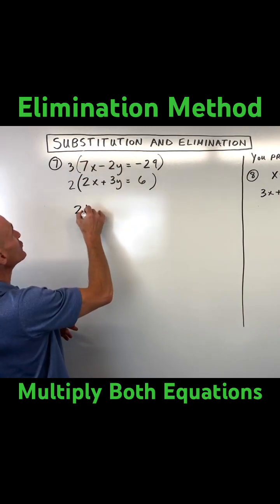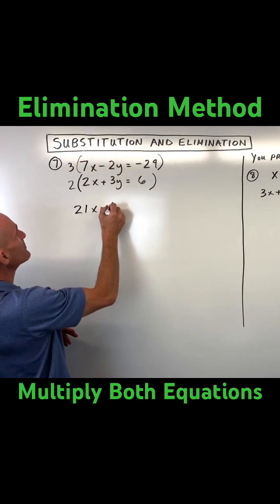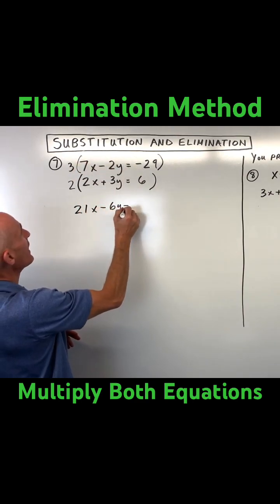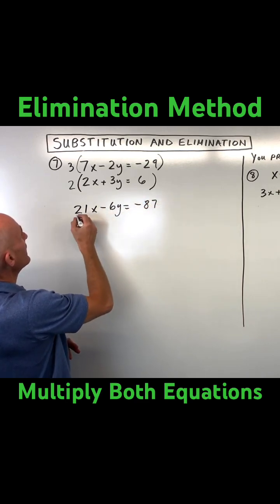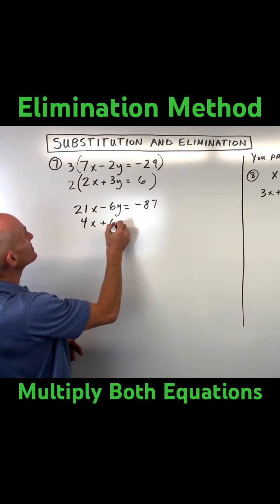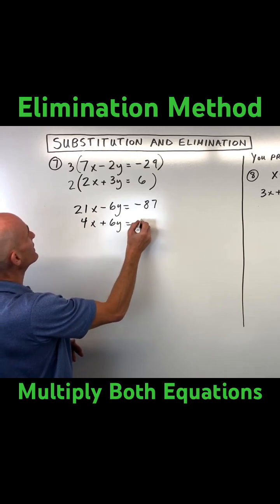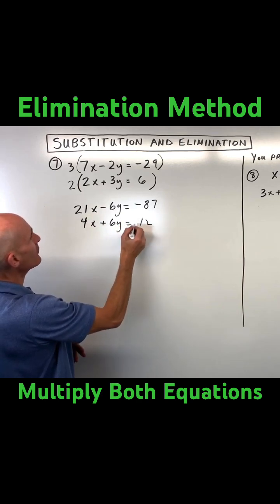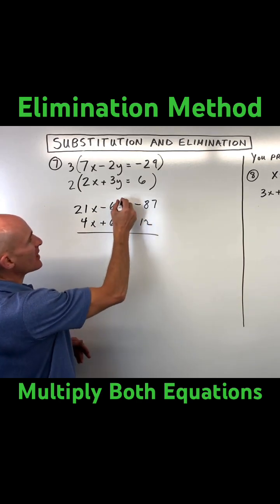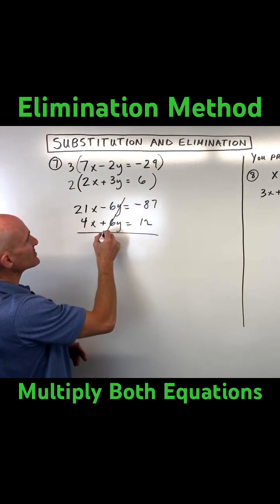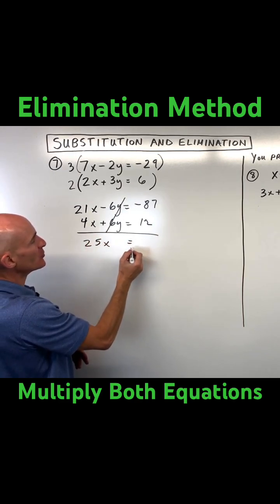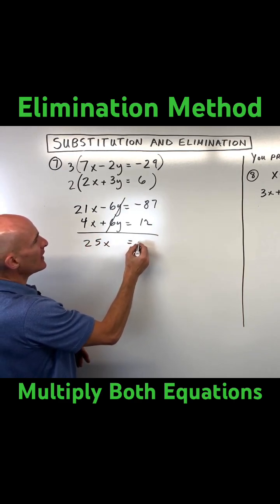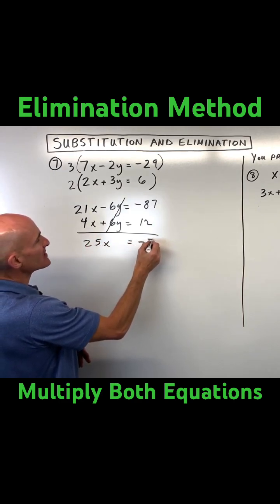We distribute the 3, we get 21x minus 6y equals negative 87. And if we distribute the 2, we get 4x plus 6y equals 12. Now when we add straight down, the y's cancel. We get 25x is equal to negative 75.